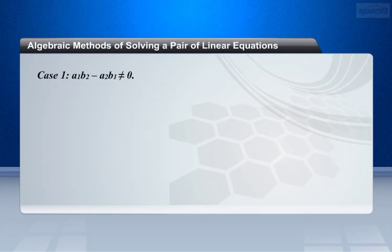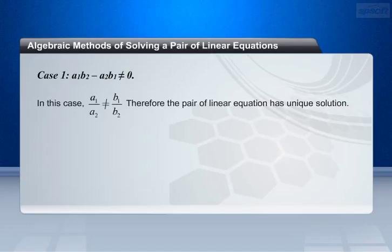Case 1: a1 b2 minus a2 b1 is not equal to 0. In this case, we get a1 by a2 is not equal to b1 by b2. Therefore, the pair of linear equations has unique solution.